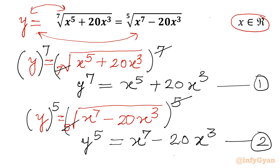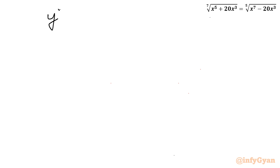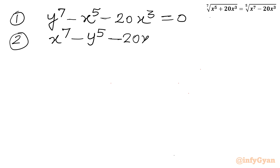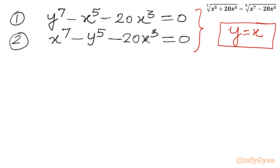Now I will be writing both equations with everything on one side of equality. Equation 1: y⁷ minus x⁵ minus 20x³ equal to 0. Equation 2: x⁷ minus y⁵ minus 20x³ equal to 0. If you notice this system of equations, there will be a solution y equal to x. If I plug that in, both equations become identical, and it will help us find all real solutions.